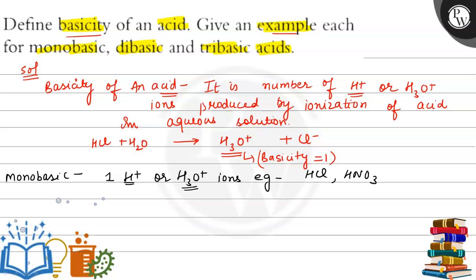Examples of monobasic acids are HCl and HNO₃. When HCl undergoes ionization in water, it gives only one H₃O⁺ ion. Similarly, HNO₃ also gives only one H₃O⁺ ion. HCl has one replaceable hydrogen and HNO₃ also has one replaceable hydrogen, which is why both are monobasic.